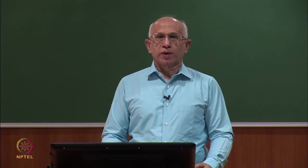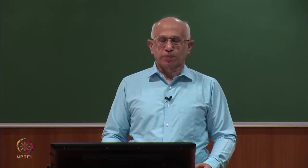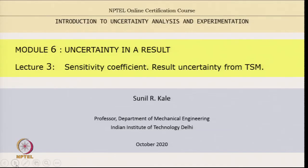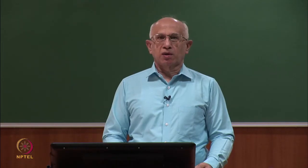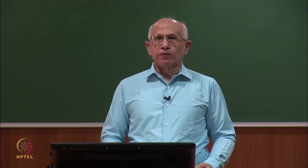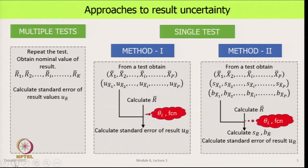Welcome to the course Introduction to Uncertainty Analysis and Experimentation. We are on module 6, which is uncertainty in a measurement, and in this lecture we will look at sensitivity coefficients and result uncertainty from the Taylor Series Method. In the previous lecture we had seen the approaches to result uncertainty — we could follow the multiple test route or the single test route, so we have two options.